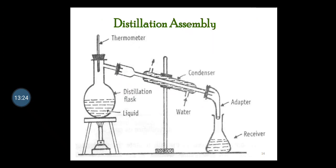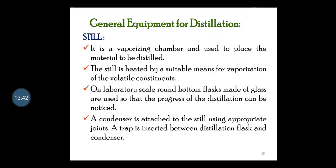In a simple distillation assembly, the general equipment required includes a still, which is a vaporizing chamber used to place the material to be distilled. The still is heated by suitable means for vaporization of volatile constituents. On laboratory scale, round bottom flasks made of glass are used so that the progress of distillation can be noticed. A condenser is attached to the still using appropriate joints, and a trap is inserted between the distillation flask and the condenser.